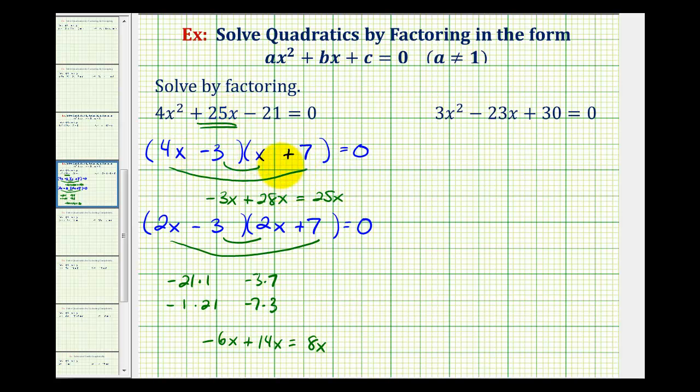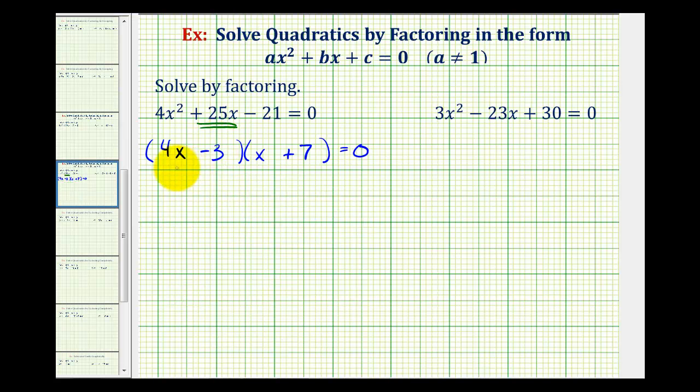Because we have a product equal to zero, the first factor of 4x minus 3 must equal 0 or the second factor of x plus 7 must equal 0.